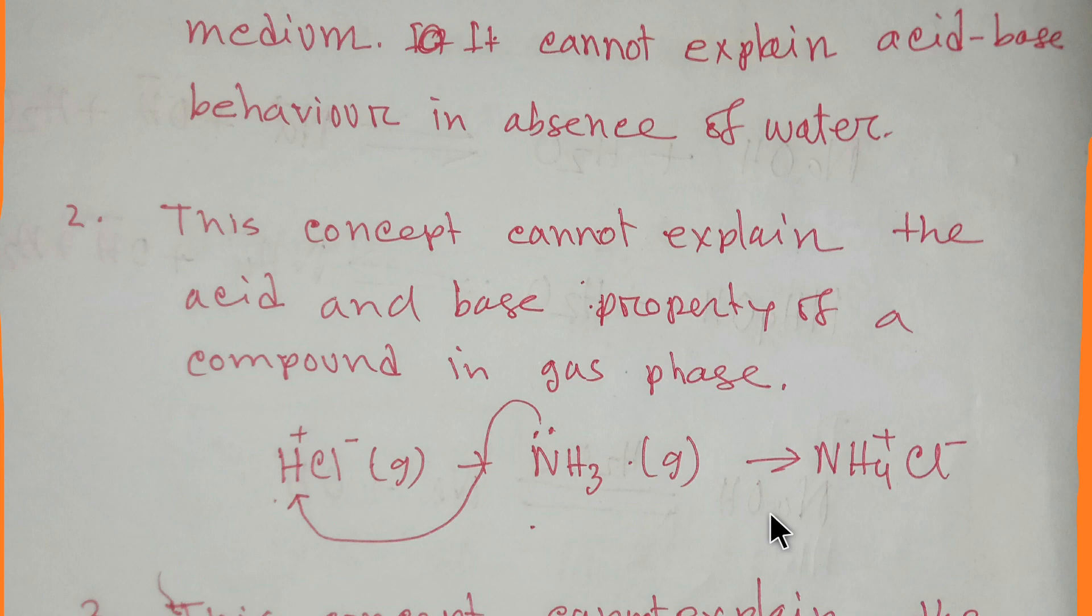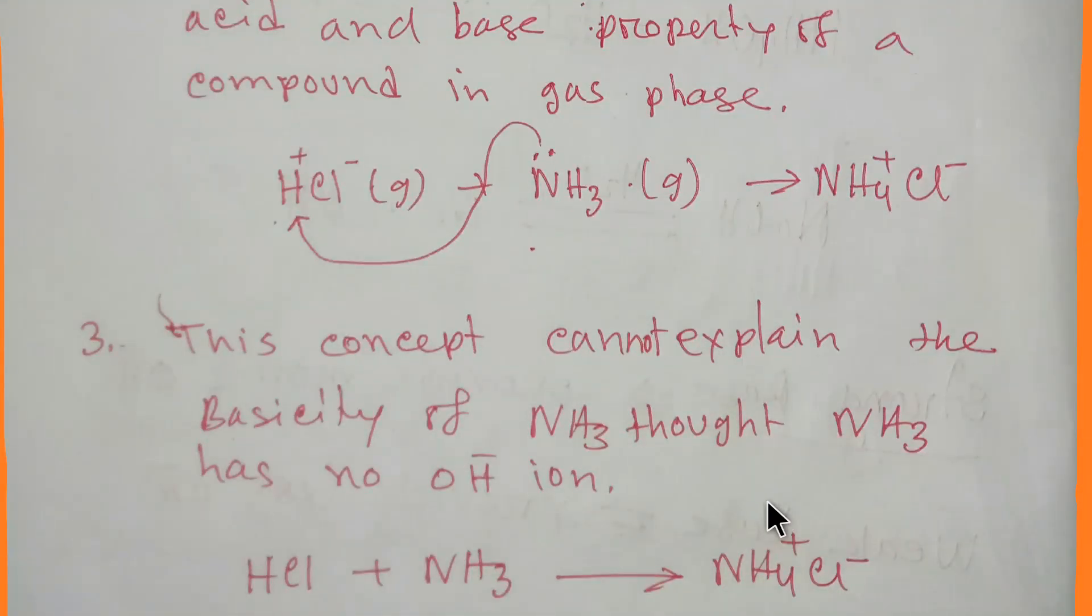The number three limitation is that this concept can't explain the basicity of ammonia. Though ammonia has no hydroxyl ion, ammonia reacts with HCl and produces ammonium chloride. Here ammonia is a base.